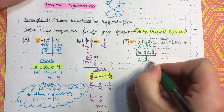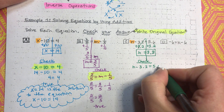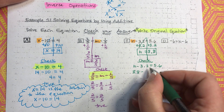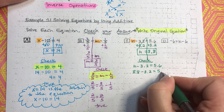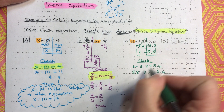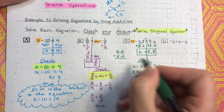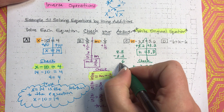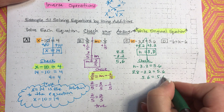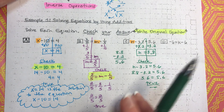Now we're going to go ahead and check our answer. Write that original equation, then substitute the value 8.8 in for n. So, 8.8 minus 3.2 equals 5.6. Let me work that out: 8 minus 2 is 6, bring down the decimal, 8 minus 3 is 5. So, the answer is 5.6 equals 5.6, which is a true statement — meaning our solution n equals 8.8 is correct.